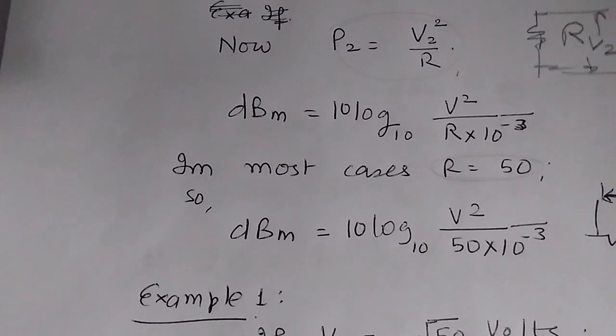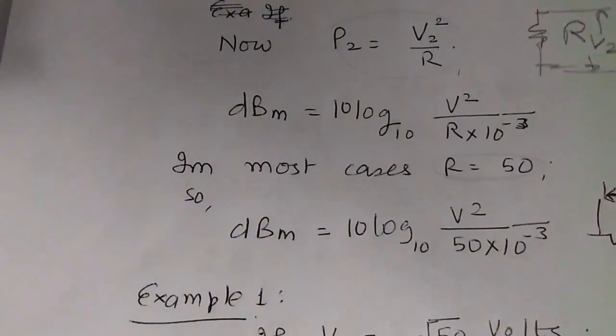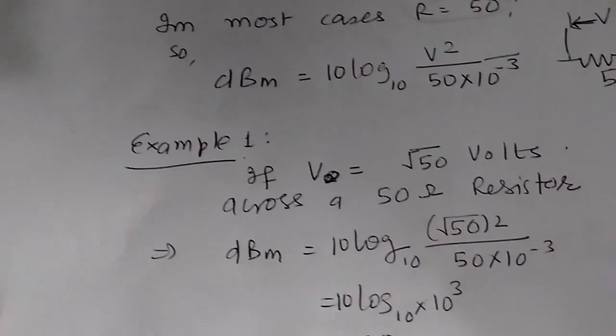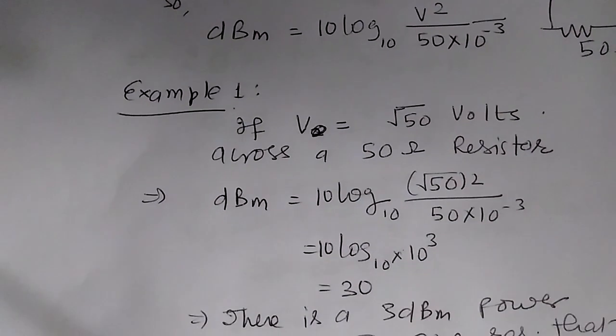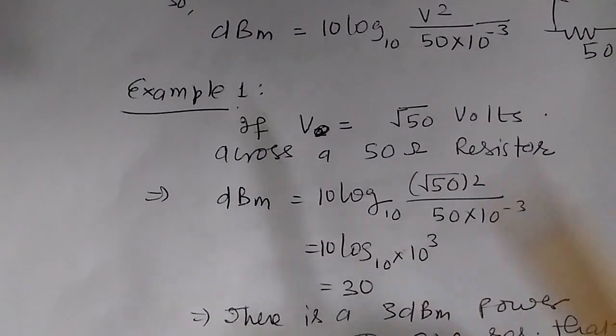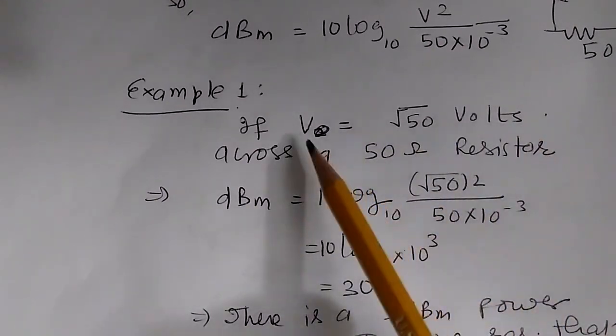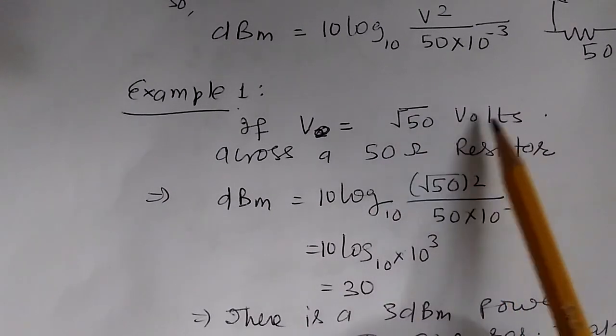Let's look at some examples. If we measure a voltage and it comes out to be √50 volts, that would be about 7 point something volts, since 7² = 49. We measure this on an oscilloscope and see √50 volts.